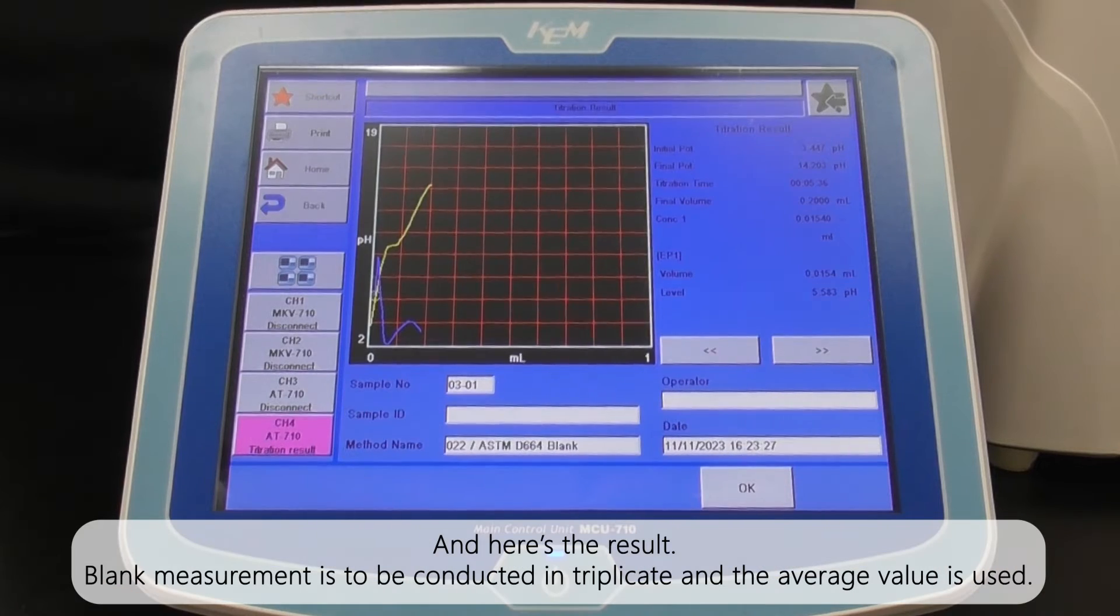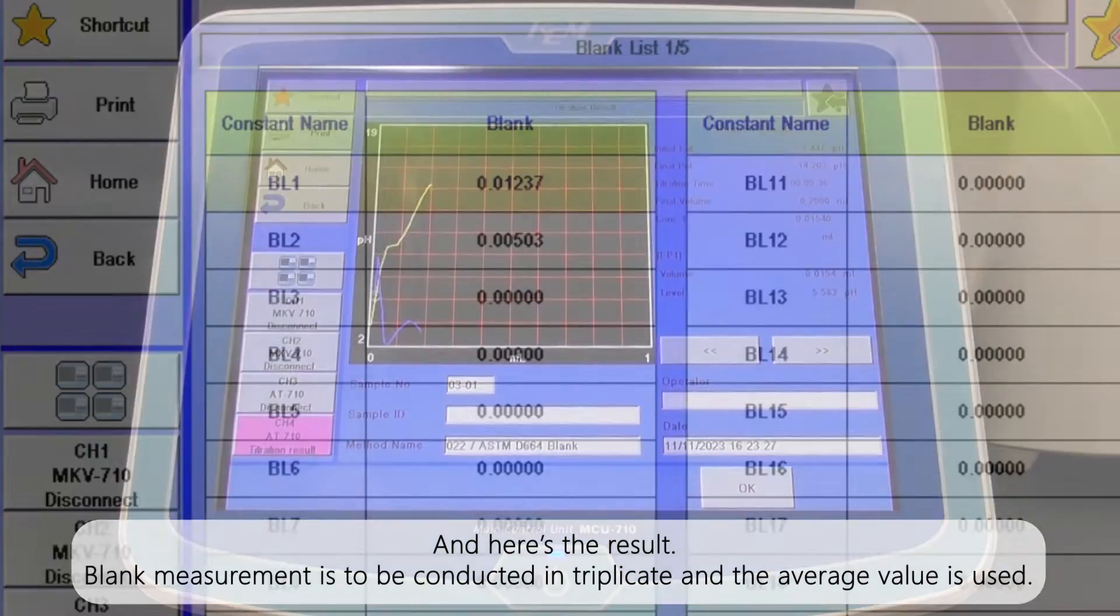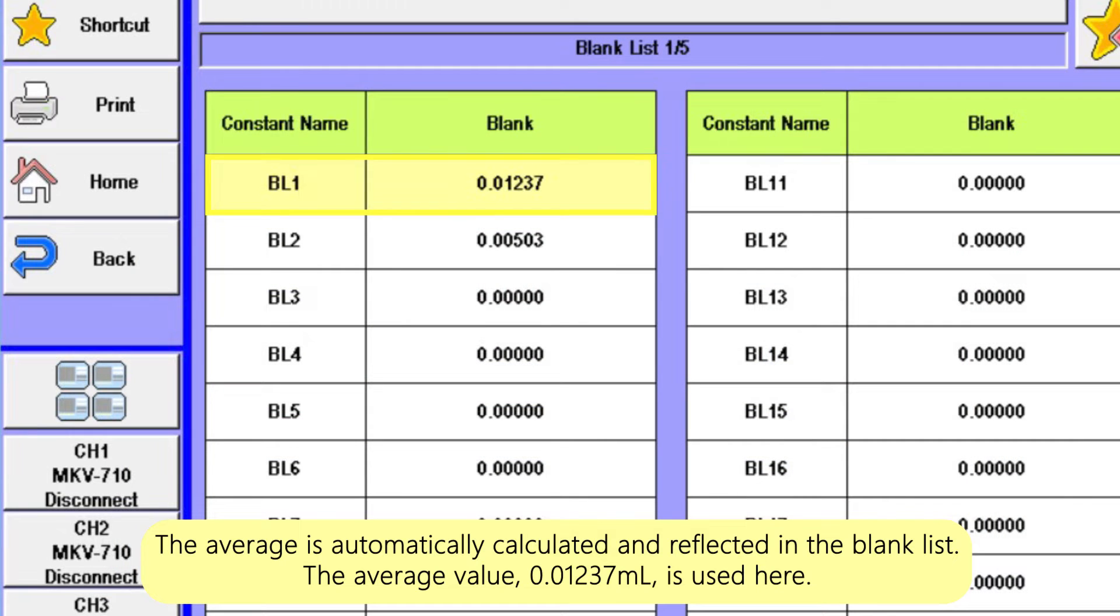And here's the result. Blank measurement is to be conducted in triplicate and the average value is used. The average is automatically calculated and reflected in the blank list. The average value 0.01237 mL is used here.